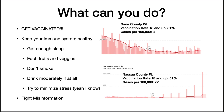Keeping your immune system healthy is a great idea. There are a number of behaviors shown to keep your immune system in peak condition: get enough sleep, eat well-balanced diets with fruit and vegetables, don't smoke, drink mildly if at all, and try to minimize stress.